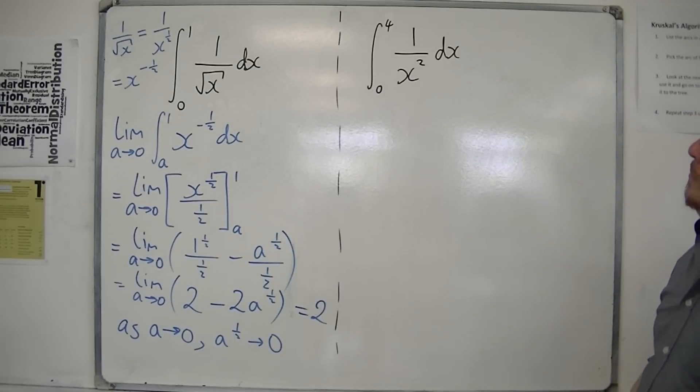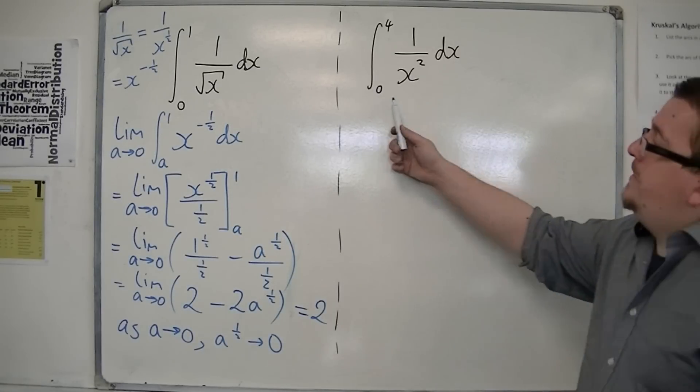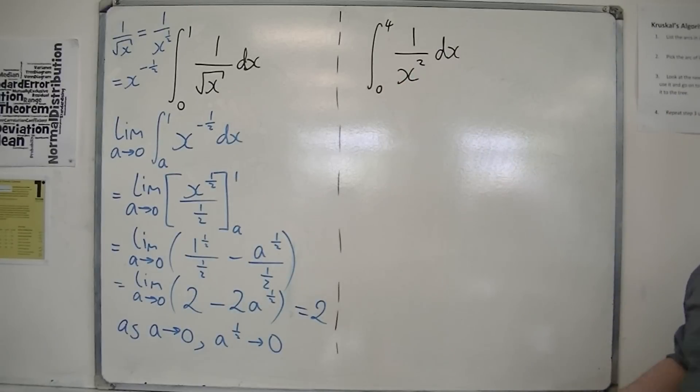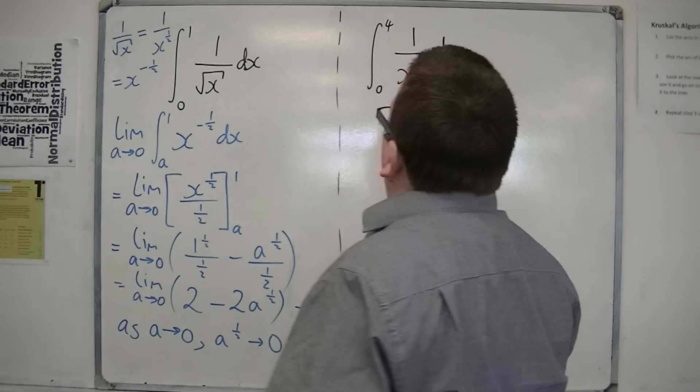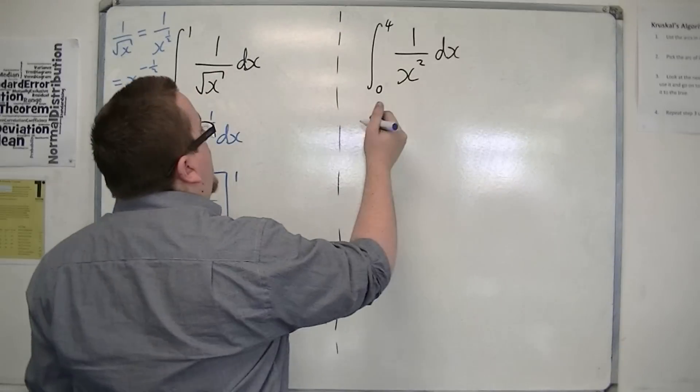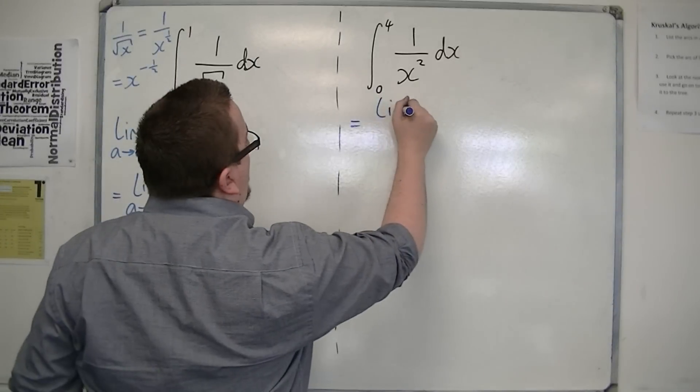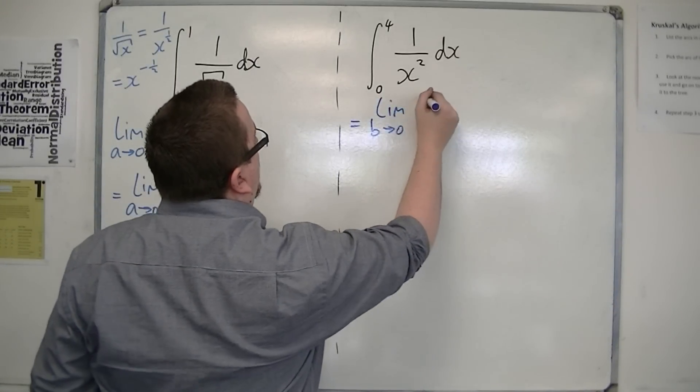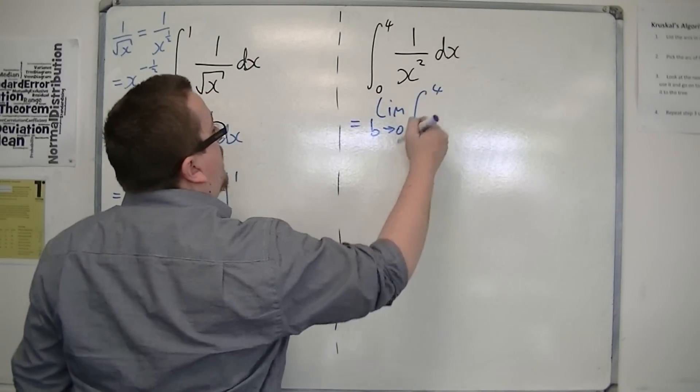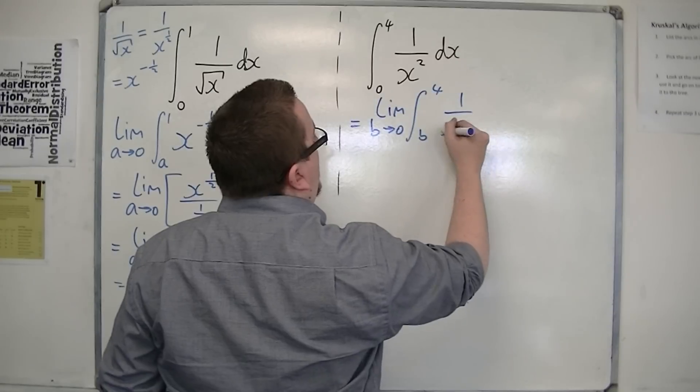So let's look at this example. Evaluating between 0 and 4, 1 over x squared dx. So I'm going to introduce a letter, as I did before, but this time I'm going to use b. So the limit as b tends to 0 for the integral of b to 4 of 1 over x squared dx.